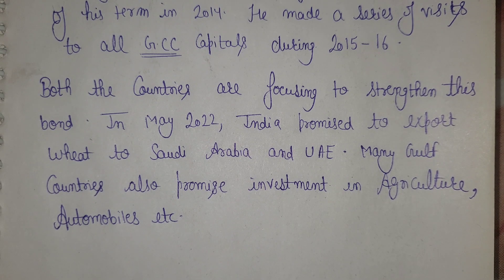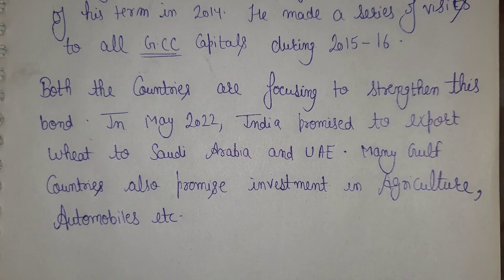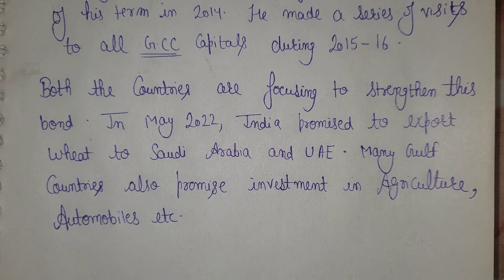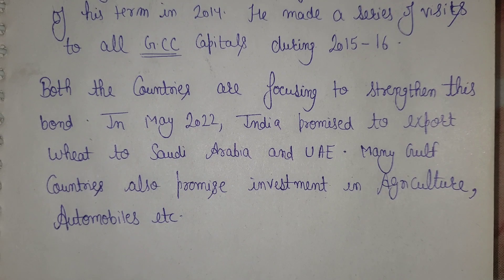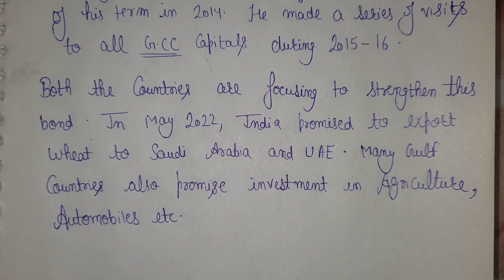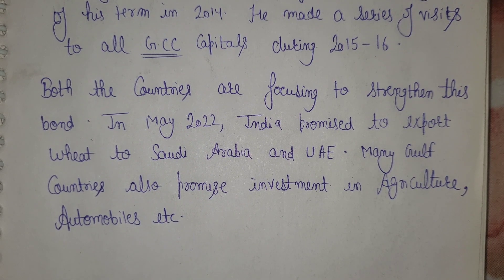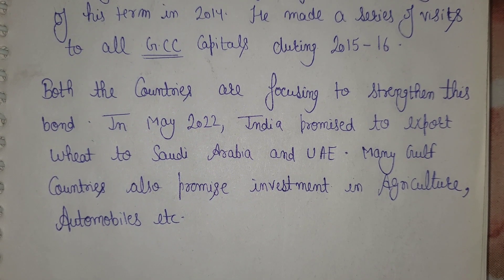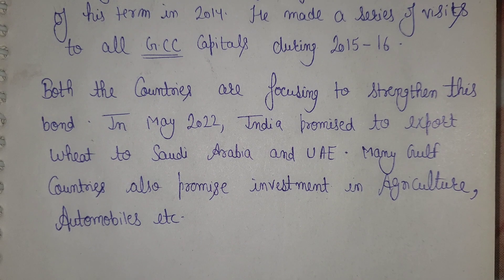India has been doing food grain exports to Saudi Arabia and UAE, and many Gulf countries have promised investment in agriculture and electric automobiles. This clearly shows how strong a bond both countries share. So to explain the Indian diaspora and the Gulf region: write an introduction, cover the factors, then the challenges, and end with a conclusion.